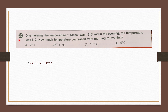Question number 30: One morning the temperature of Manali was 16 degrees centigrade and in the evening it was 5 degrees centigrade. How much did the temperature decrease? Temperature decrease is 16 minus 5, which is 11 degrees centigrade. So our answer is option B, 11 degrees centigrade.